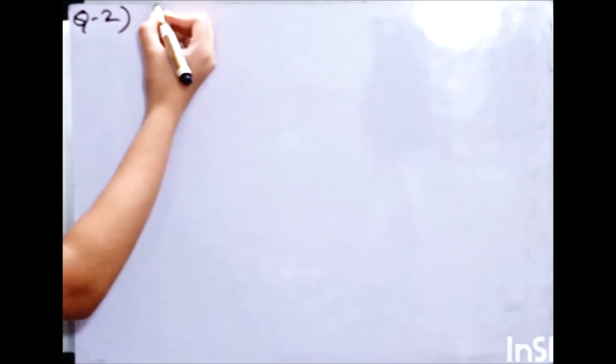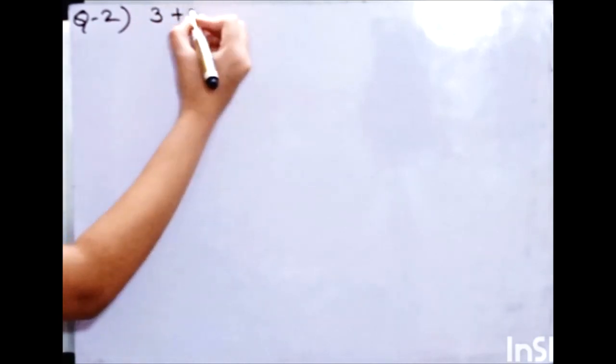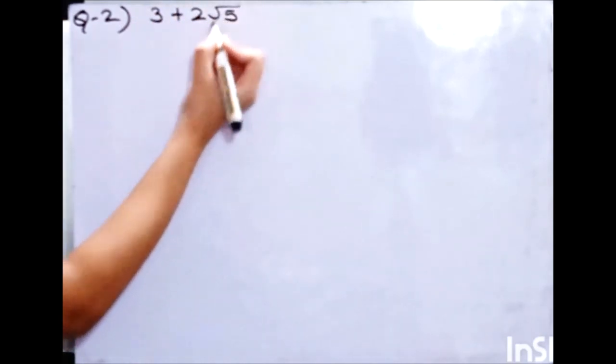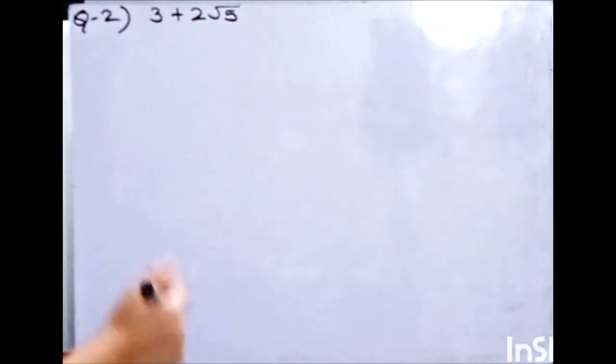Hello everyone, welcome to my channel CVSE Courses with Reiki. Today we are going to do question number 2 of exercise 1.2. In this we have to prove that 3 plus 2 root 5 is an irrational number.